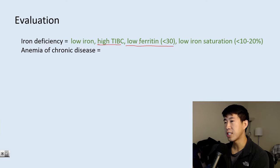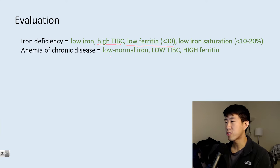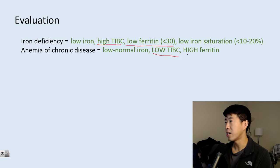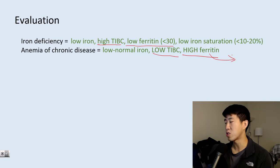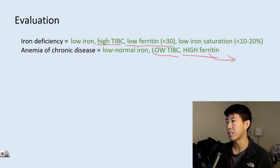In contrast, with anemia of chronic disease you'll see low or sometimes normal iron, low TIBC compared to the high TIBC of iron deficiency, and high ferritin. This high ferritin tells you that the patient's iron stores are actually adequate — they're just not able to use those stores because of chronic inflammation.